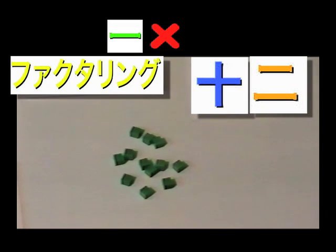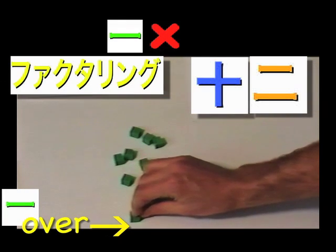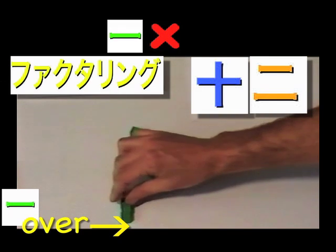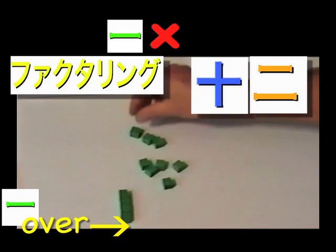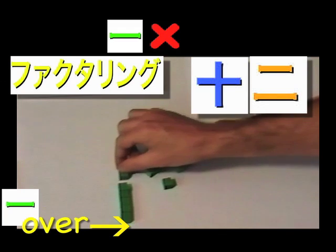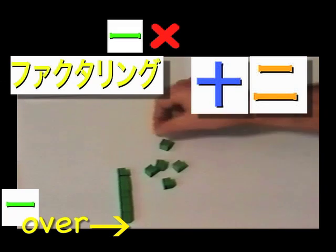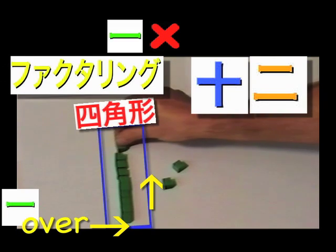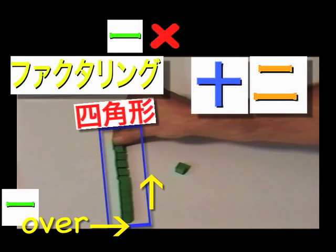Let's factor 12. What is factoring? Factoring is building a rectangle. Let's see if we can build a rectangle that is 1 wide or 1 over. Here we are 1 wide. We will discover that we can always build a rectangle 1 wide, regardless of the amount.